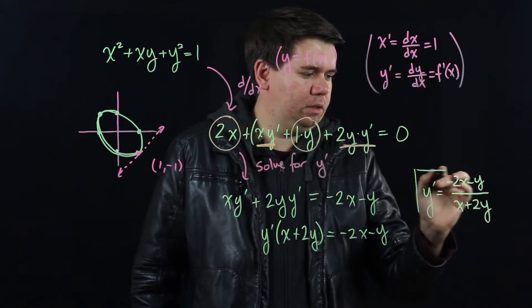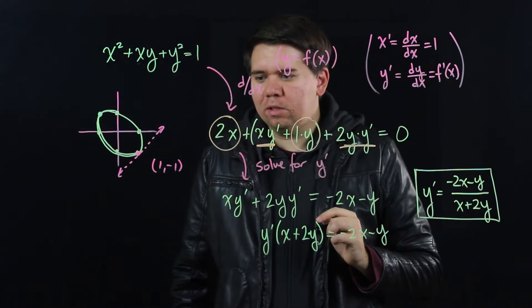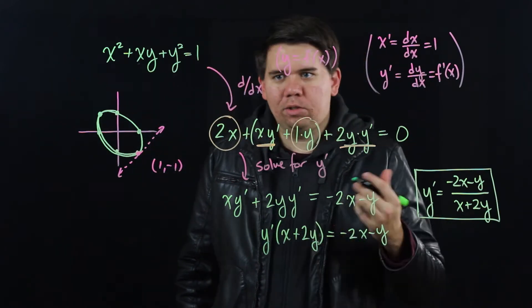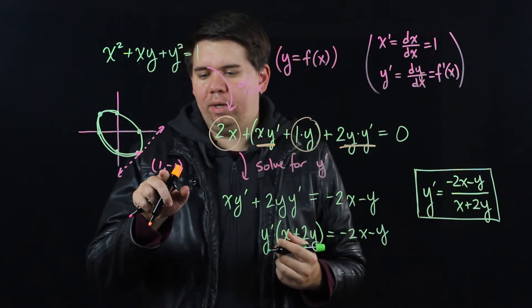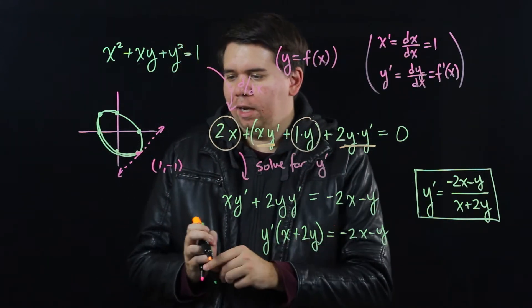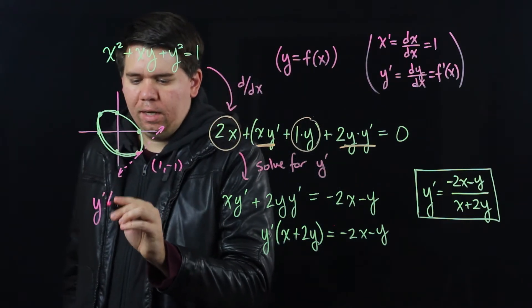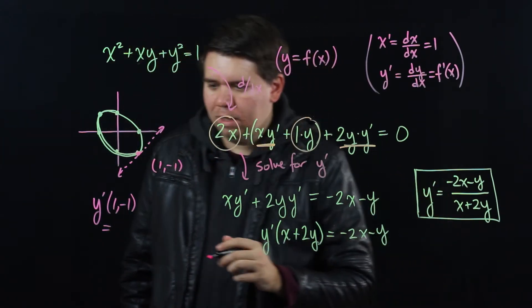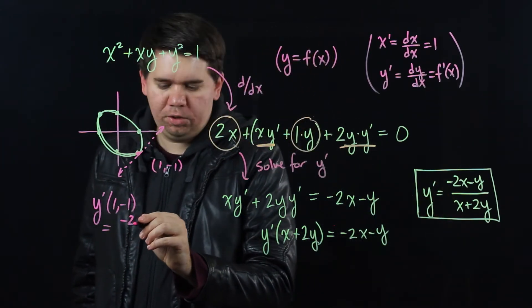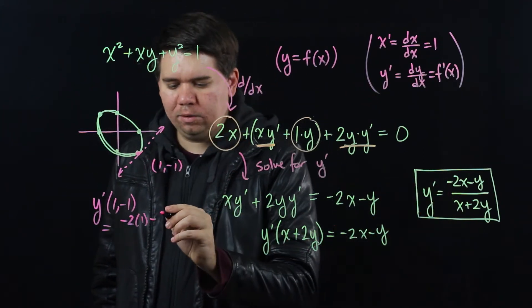I have an expression for my derivative. This is going to be describing the slope at any point. So for example, if I want to know what the slope is at the point 1 minus 1, I can just go ahead and I can calculate. What is my y prime at 1 minus 1? And so I'll plug in here. Wherever I see an x, I plug in 1. Negative 2 times 1. Minus, wherever I see a y, I put in minus 1.